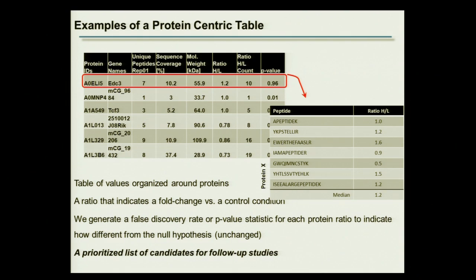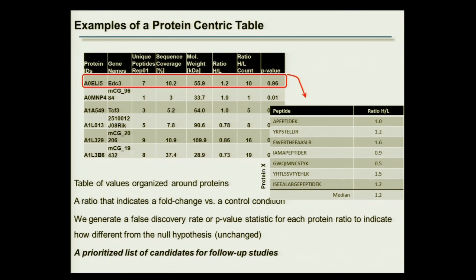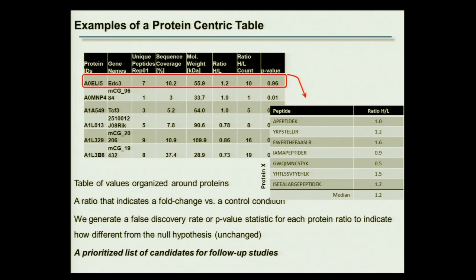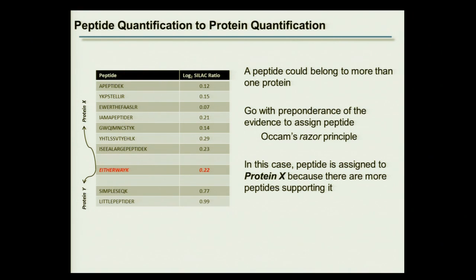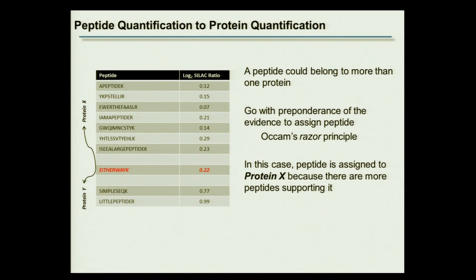Protein identities and quantifications come from peptide-level data. For example, seven unique peptides might be used to identify a particular protein; each peptide gets a ratio, the median of these ratios is computed, and that median becomes the protein ratio. We typically require at least two unique peptides to consider a protein identification. The more peptides you have, the more evidence for that protein, but you also need to consider the number of ratios calculated — it's a matter of how robust your quantification and identification are.